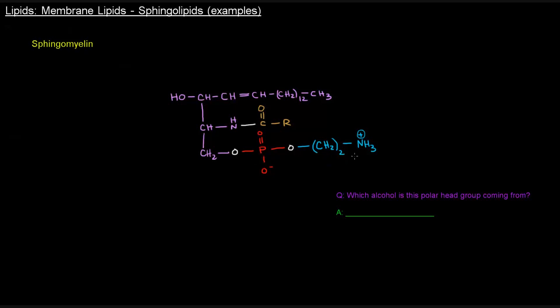So which alcohol is this? This alcohol is from ethanolamine. Now, this question here says, which alcohol is this polar head group coming from? That's different from asking, what is the polar head group? The polar head group entirely is phosphoethanolamine. But it's just asking which alcohol is this polar head group coming from, and that would be ethanolamine.